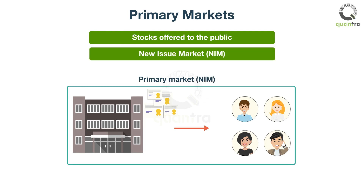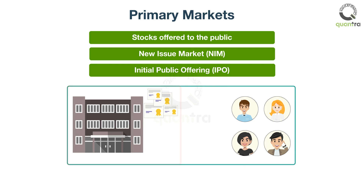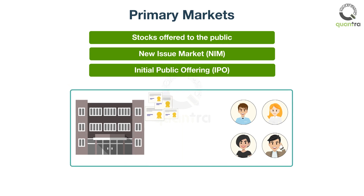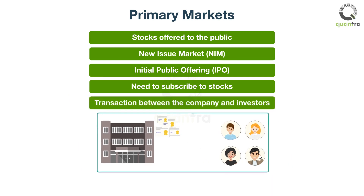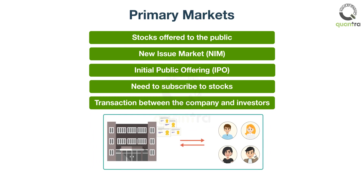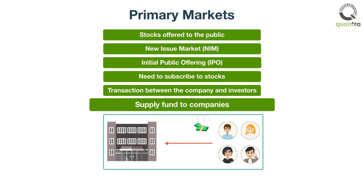The process by which shares are issued to the public is known as initial public offering, IPO. You will learn the IPO process in detail in the upcoming units. To buy stocks in the primary market, the general public has to subscribe to the stocks that the company is offering. When a company offers its stock, they can be directly purchased by investors in the primary market. Hence, the transaction happens between the company and investors. In other words, this market directly supplies funds to companies.